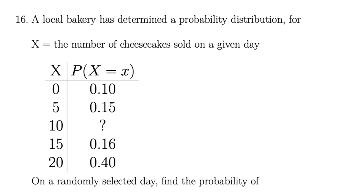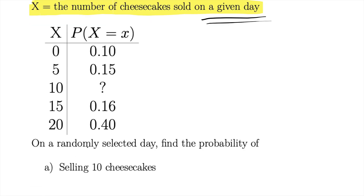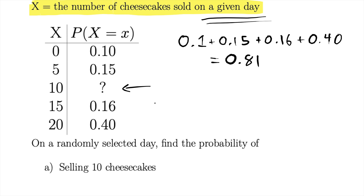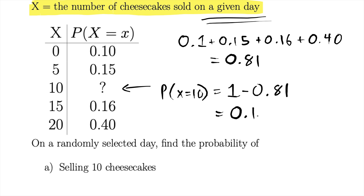In number 16 we have a new situation — a new discrete random variable that is not binomial. We're given a probability distribution with possible values and their probabilities for the number of cheesecakes sold on a certain day. In part a, we find the probability of selling 10 cheesecakes, which is the unknown value. Taking advantage of the fact that all probabilities must add up to 1, if we add the given numbers, the probability of observing 10 is everything left over: 0.19. That's the probability on a random day of selling exactly 10 cheesecakes.